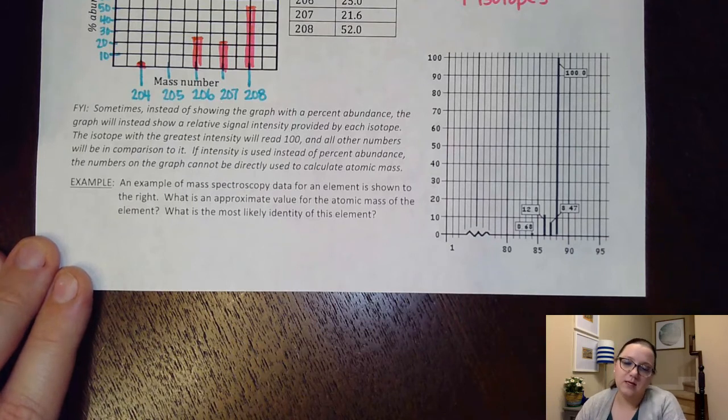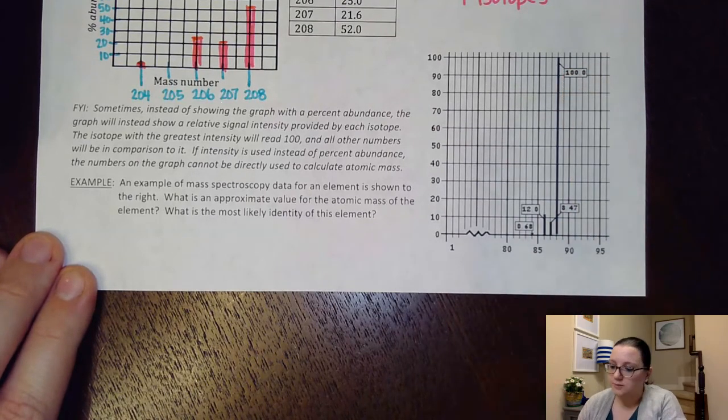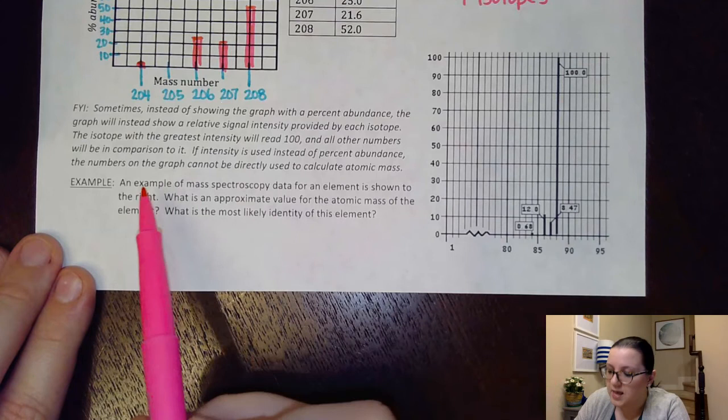And again, you should be able to tell really easily whether or not the percents add up to 100 or if you have intensity numbers that are going to be adding up to way above 100. So on this end, it asks, Hey, an example of mass spectroscopy data for an element is shown to the right. What is an approximate value for the atomic mass of the element?